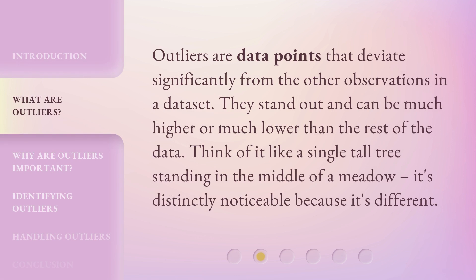Outliers are data points that deviate significantly from the other observations in a data set. They stand out and can be much higher or much lower than the rest of the data. Think of it like a single tall tree standing in the middle of a meadow — it's distinctly noticeable because it's different.